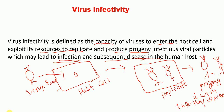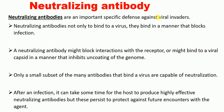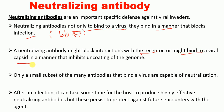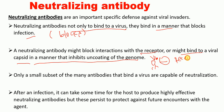Now I'd like to talk about what neutralizing antibodies are. Basically, neutralizing antibodies not only bind to the virus — they bind in a manner that blocks infection. A neutralizing antibody might block interaction with the receptor, or it might bind to a viral capsid in a manner that inhibits uncoating of the genome. So when the neutralizing antibody has bound to the virus, it may block interaction with the receptor, and uncoating of the genome will also be blocked.